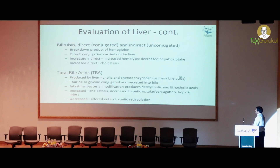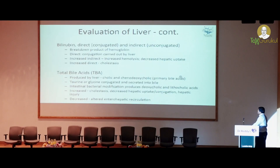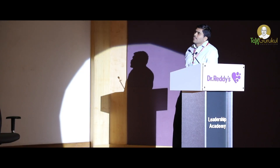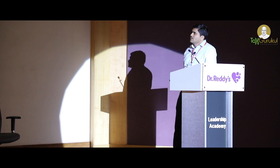Coming to bilirubin, we have direct and indirect bilirubin. Direct bilirubin is the conjugated form, conjugated with bile salts. These are the breakdown products of hemoglobin, and conjugation is carried out by the liver. Increased indirect bilirubin is mainly due to increased hemolysis or decreased hepatic uptake, and increased direct bilirubin is due to cholestasis. Total bile acids are produced by the liver. The two important bile acids are cholic and chenodeoxycholic bile acids. Increased total bile acids are seen mainly in cholestasis, decreased hepatic uptake, and hepatic injury. Decreased total bile acids are seen in altered enterohepatic recirculation.